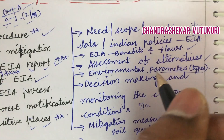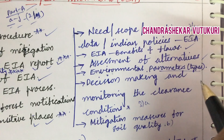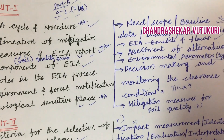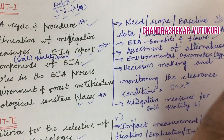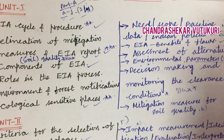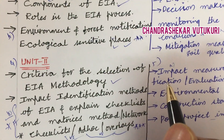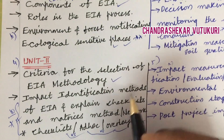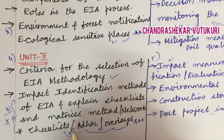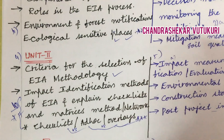EIA benefits and flaws may also be short questions. Assessment of alternatives, environmental parameters and their types, decision making, and monitoring clearance conditions are likely long questions. Mitigation measures for soil quality are among the top questions. For Unit 2, questions 4 and 5 cover criteria for selection of EIA methodology, impact identification methods, checklist and matrices method, network method, ad hoc, and overlays method — any of which could be a direct 10-mark question.